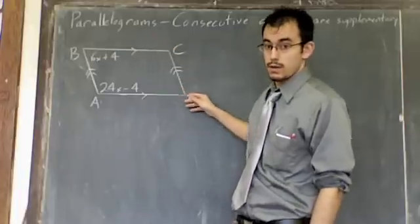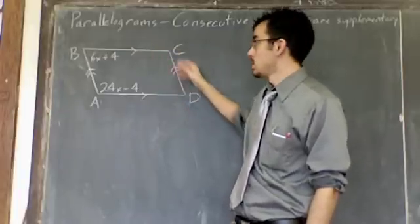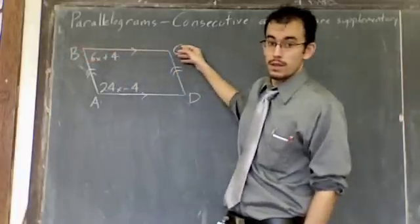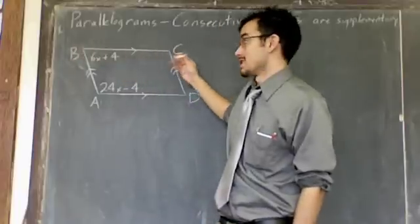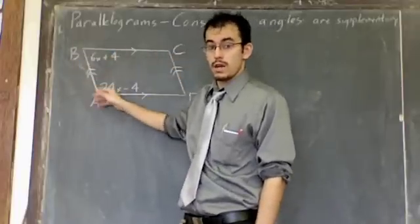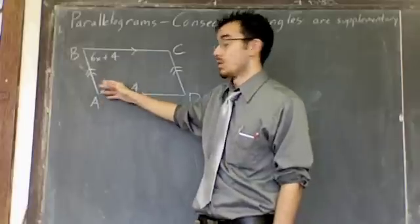C and D are consecutive. They're connected by this side here. B and C are consecutive. They're connected by this side here. And lastly, A and B are consecutive. They're connected by this side here. And these are the ones that I'm worried about right now.